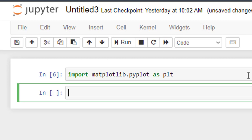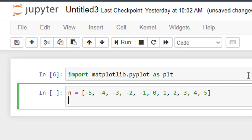We will create two lists. One is for independent variable n. And as I told you, n starts from minus 5, minus 4... this is the independent variable.